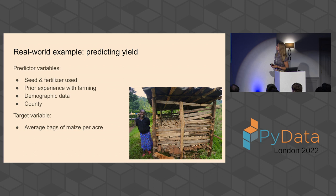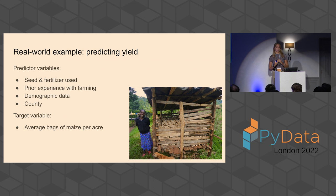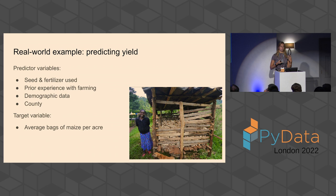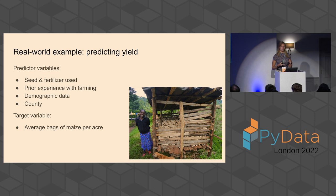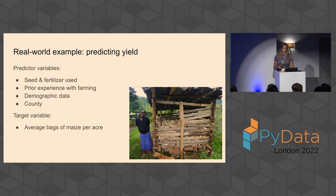The real-world example I'm going to talk about is predicting yield. By the way, these are all pictures I took myself in Kenya. When we try to predict yield, we use data collected in our application survey. When a farmer applies for our loan, we call them and ask some questions. We ask about their last season — for example, how many bags of maize did you harvest last year? We normalize that per acre. We have predictor variables such as which seeds and fertilizer they used, their prior farming experience, demographic data, and their county.